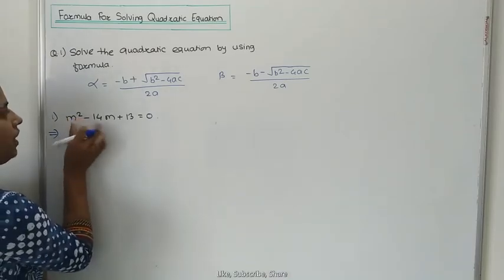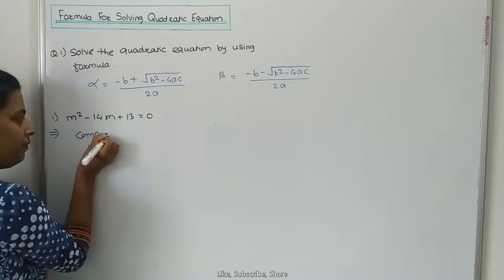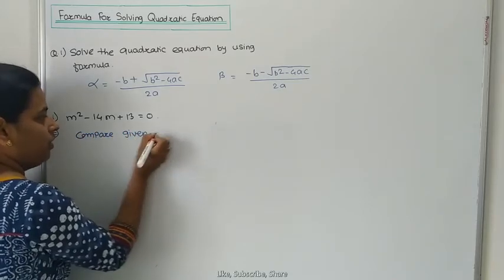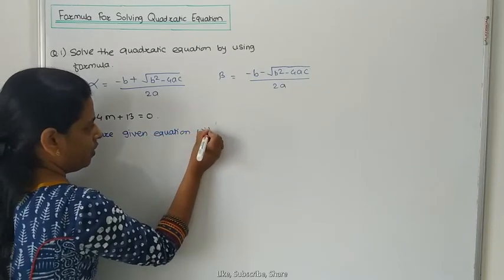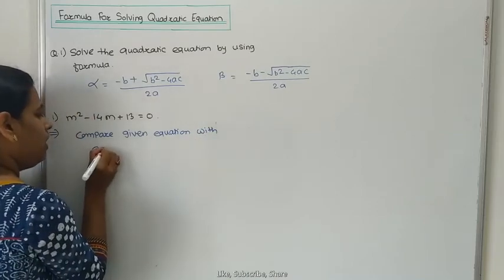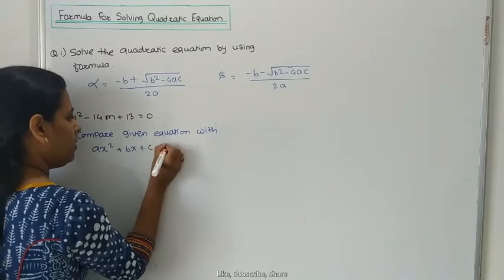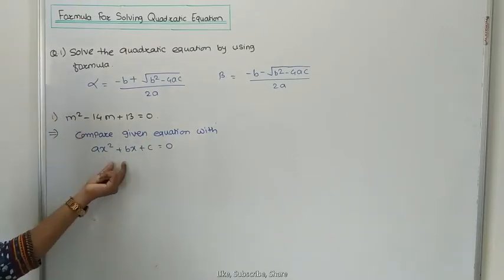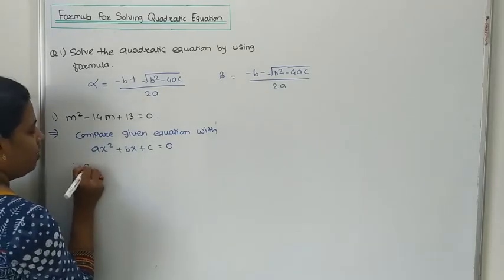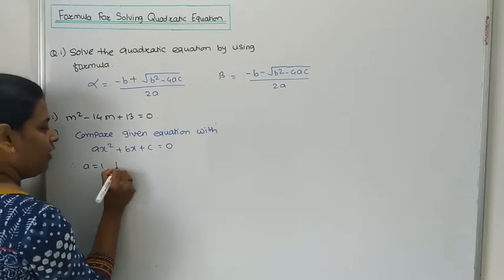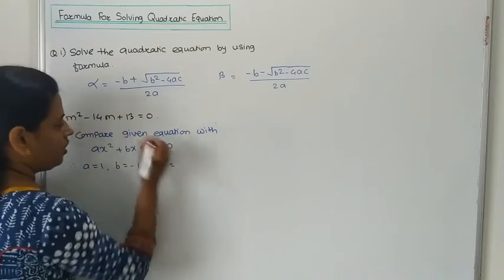First, compare this equation with the standard form AX² + BX + C = 0. We have to compare the given equation with this standard format. Therefore, the value of A is 1, the value of B is -14, and the value of C is 30.